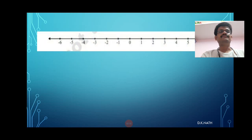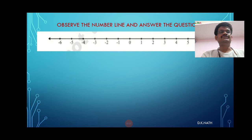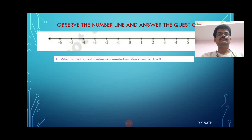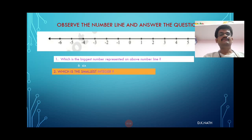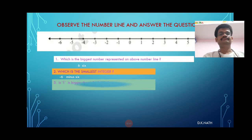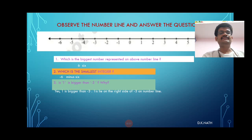Let us observe the number line and answer the questions. Which is the biggest number represented on the number line? It is 6. Which is the smallest integer on the number line? Minus 6 is the smallest integer. Is 1 bigger than minus 1 and minus 3? Yes, 1 is bigger than minus 3.